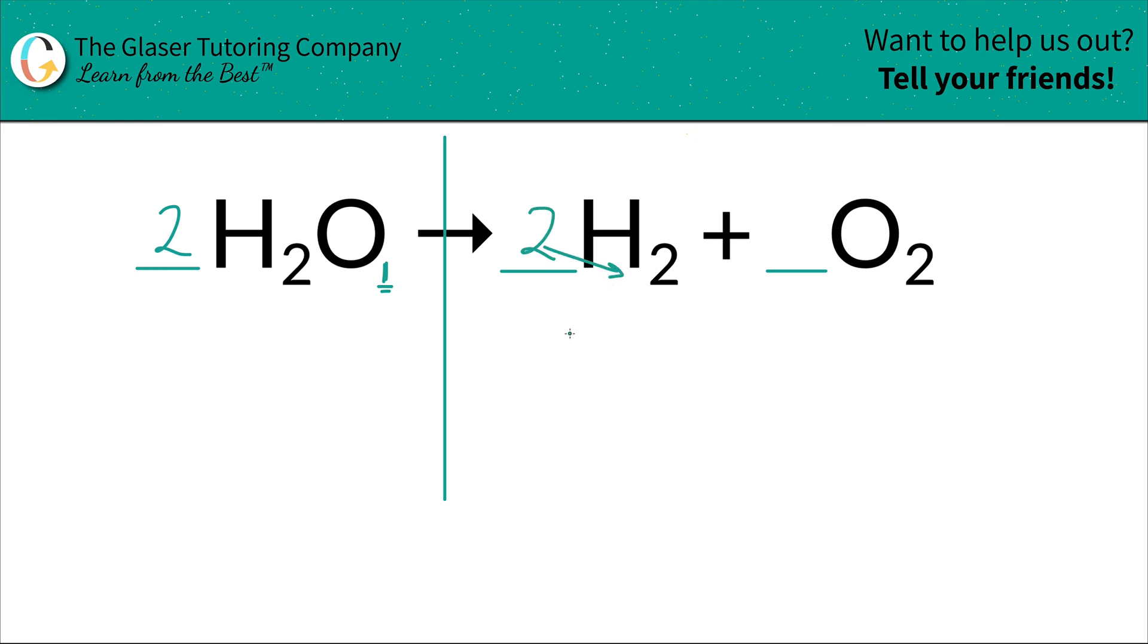So that's four hydrogens—whoops, where'd it go? There it is. So now we have four hydrogens on the right, two oxygens on the left, two oxygens on the right. And whoop-dee-doo, we're done!